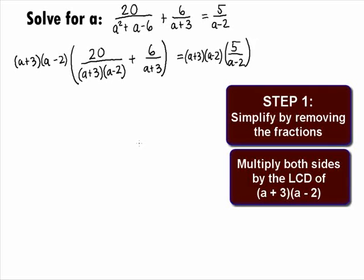a plus 3 times a minus 2 times the 20 over a plus 3 times a minus 2 will leave us with just the 20 plus a plus 3 times a minus 2 times 6 over a plus 3 gives us 6 times a minus 2. And over on the right side, the a minus 2's cancel and we're left with 5 times a plus 3.